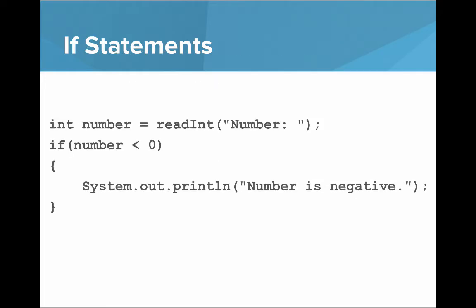So let's look at an example. Here we can say int number equals readInt, and then ask the user for a number. And then if the number is less than zero, we say system.out.println number is negative.